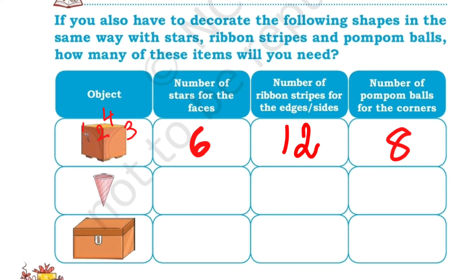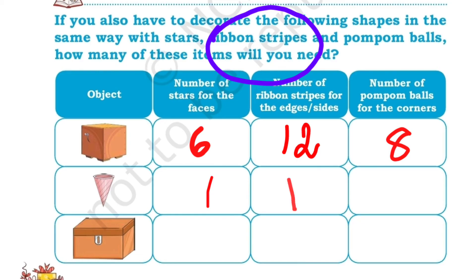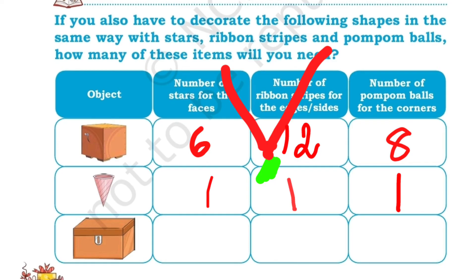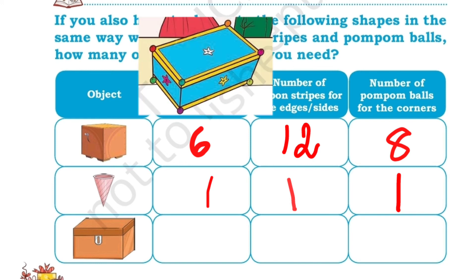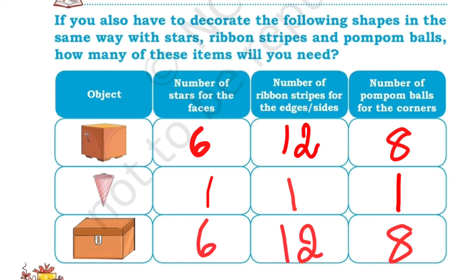The next one is cone shape. The top of the cone is in a circle shape — for a circle there is only one face. The number of edges for the cone is only one edge, because it is a circle shape — only one edge. And the cone has only one corner. The last one is the cuboid box shape — we already saw the children packed a gift box. We already know the number of faces is 6, number of edges is 12, and the corners is 8.